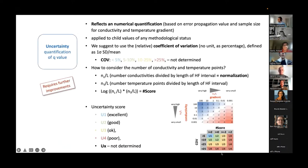The first part is about uncertainty quantification. This is not fully solved yet. We made a proposal that we can work with coefficient of variation. A final decision about this has not been made yet. The basic idea is simply that we categorize the uncertainty based on the coefficient of variation from the conductivity measurements and the number of temperatures. This is what we have to look at in detail during the in-person meeting in Potsdam.